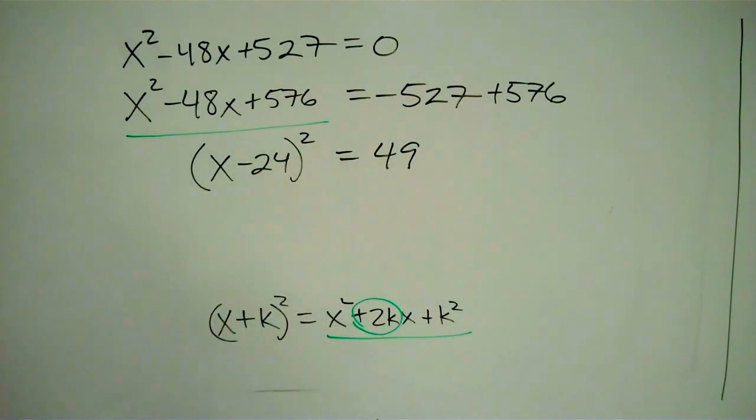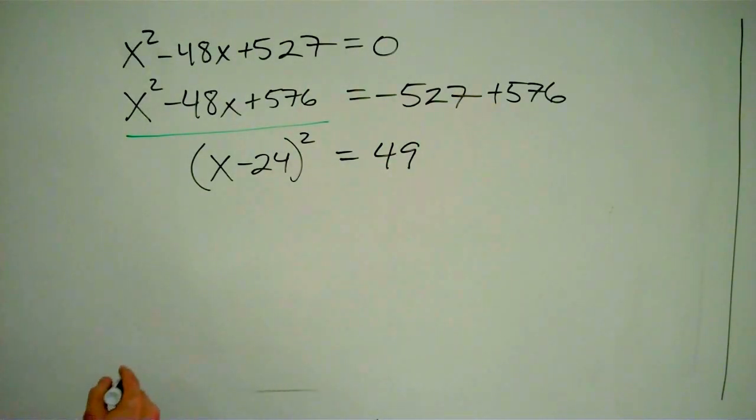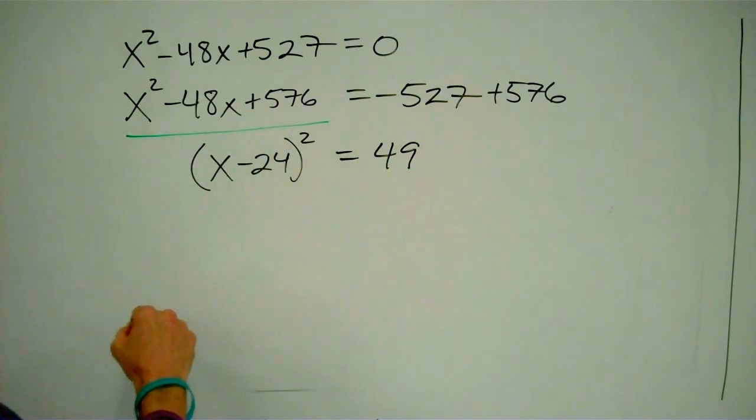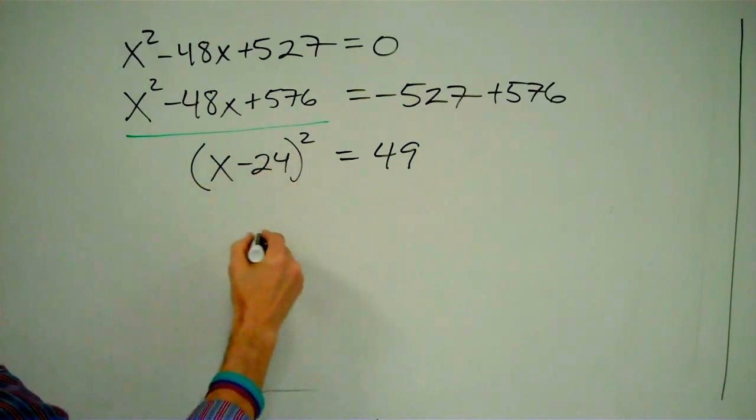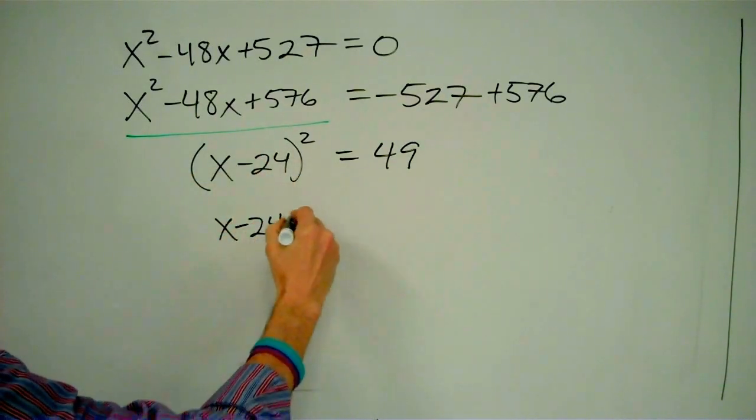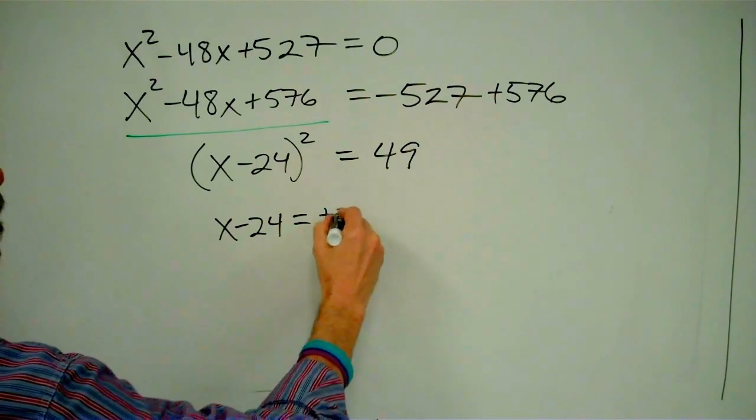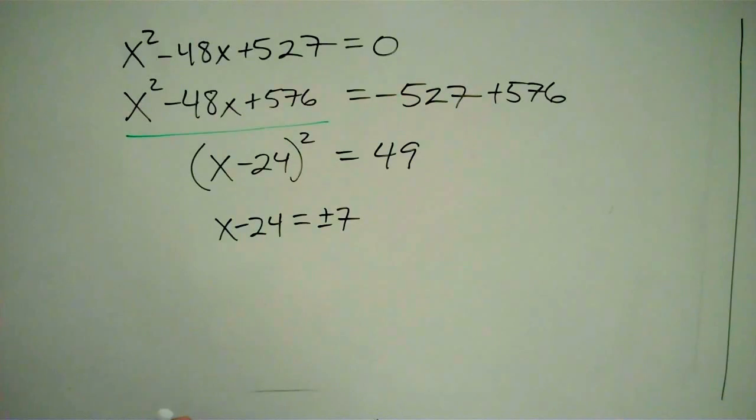Now you look at this and you say, okay, first off, let me get rid of this part now. Now you look at this and you say, what number squared equals 49? Well, I know, 7. Except there's another one as well: -7. 7² is 49. (-7)² is also 49. So that means this x - 24 could be 7 or it could also be -7. And a quick way to write that is ±7. All that means is 7 or -7.